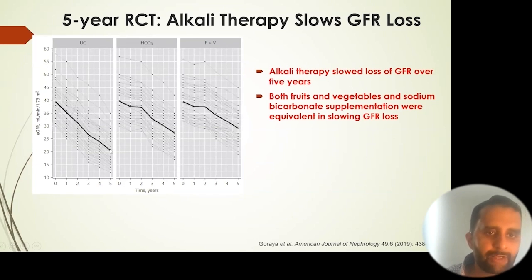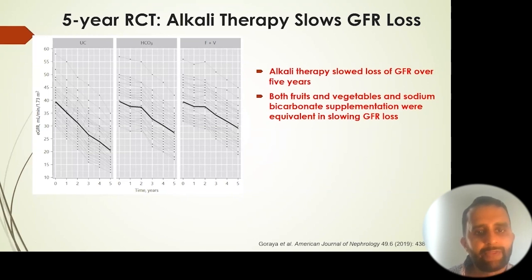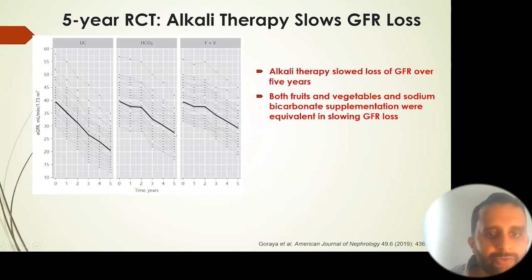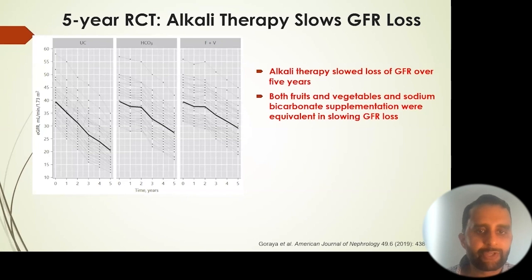Their life's work can be distilled into three graphs. Those in the usual care group who received no treatment for metabolic acidosis had a decline in eGFR — percent kidney function — over time, dropping from about 40 down to about 20. Those treated with HCO3, which stands for bicarbonate or baking soda, started from the same point but decreased much less, ending around 27.5 to 28 at five years, as opposed to 20 — substantially better than those untreated.